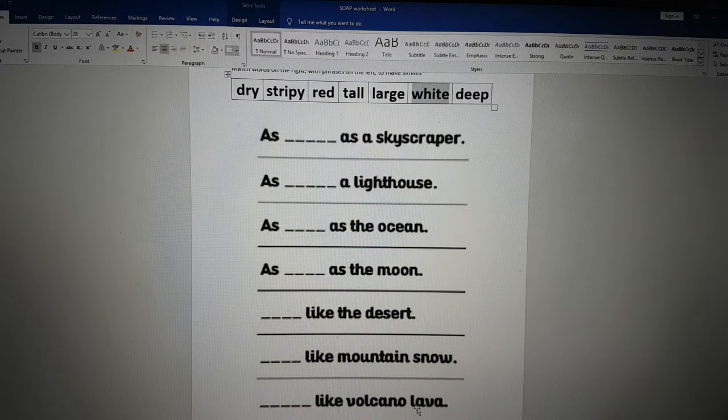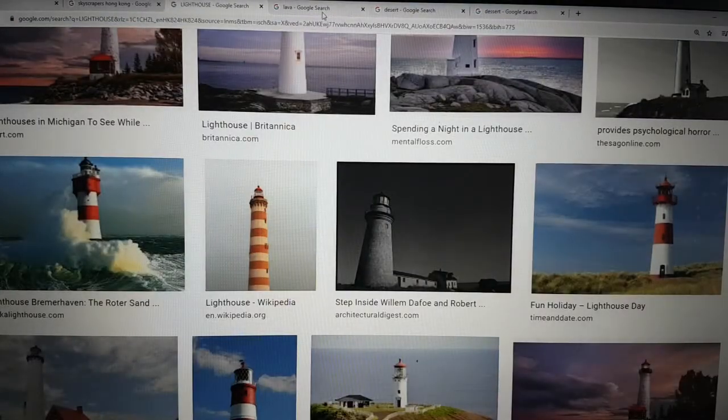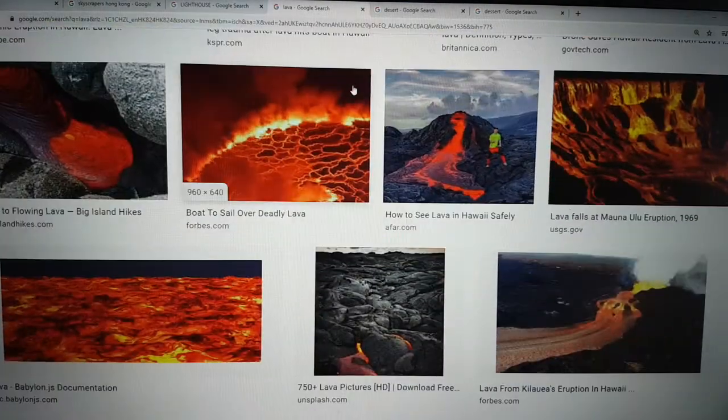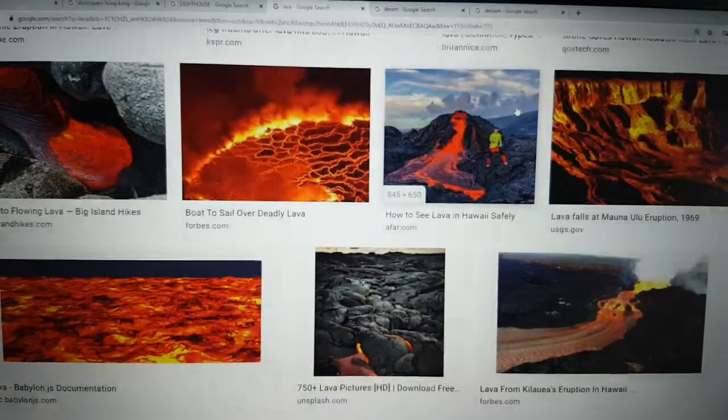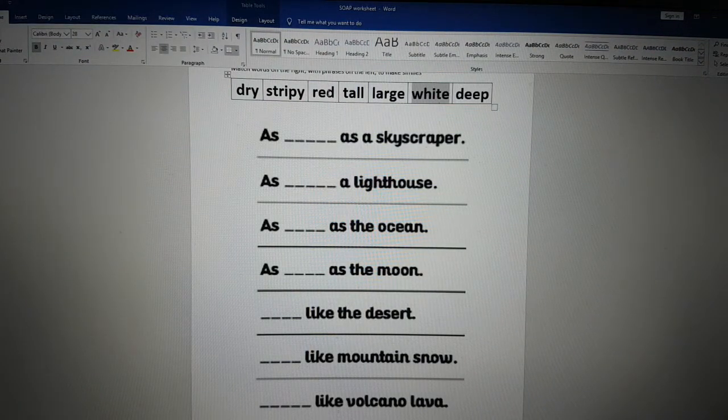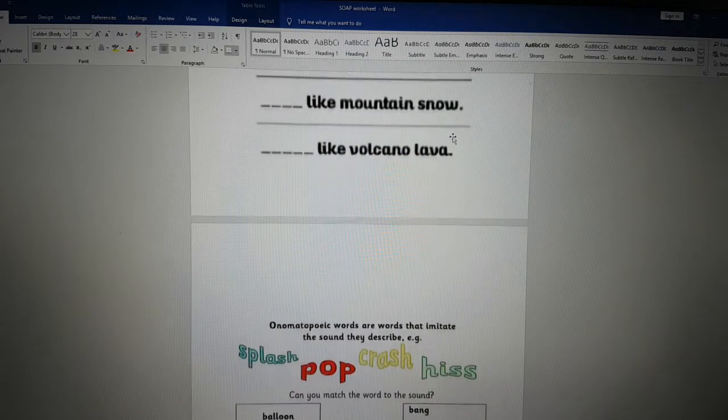And then finally, volcano lava. If you're not sure what is lava, this is lava. It comes out of the volcano. What like volcano lava? Of course, red. Red like volcano lava. That is the similes.